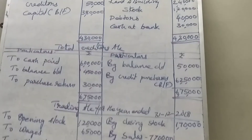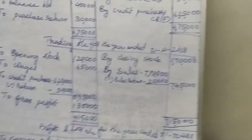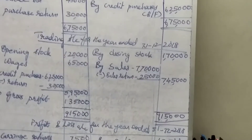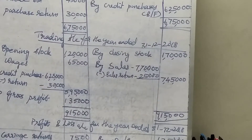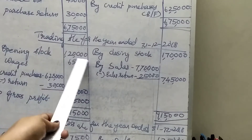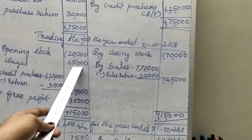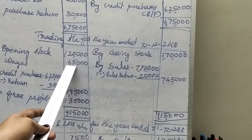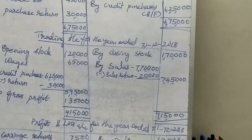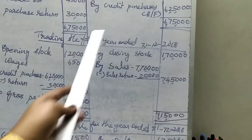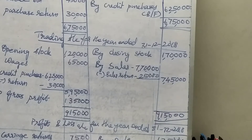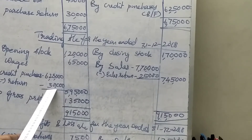Now we want to prepare the trading account for the year ended. Opening stock is given in the question — stock in trade 1,20,000. Closing stock is also given — 1,70,000. Wages is given in the other information — that is a trading expense — 65,000. Next item: credit purchases 6,25,000, less purchase returns 30,000. This side is complete.